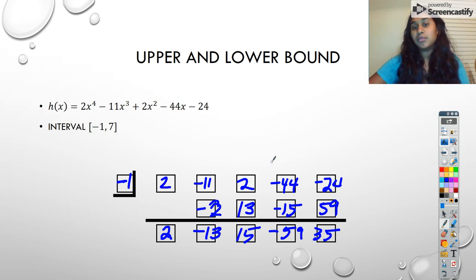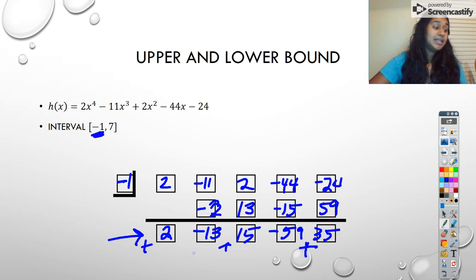You can see if I test my negative 1 and all of these return what we call alternating signs. Here this was positive, this became negative, this is positive, it became negative, and this was positive. It went from a non-negative number to a negative number. So we're alternating those signs.